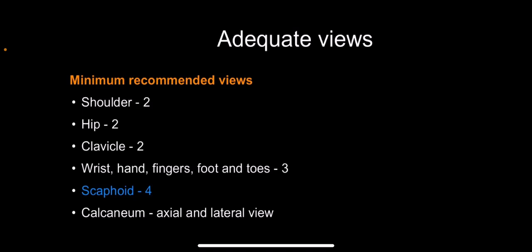Adequate views in trauma X-rays: the minimum number of views required are two for the shoulder, two for the hip, two for the clavicle. For the wrist, hand, fingers, and toes, a minimum of three views is required, and if needed, oblique and extra views should be taken to demonstrate the fracture. For the scaphoid, four views minimum are required on plain radiograph. For the calcaneum, axial and lateral views are the minimum required.